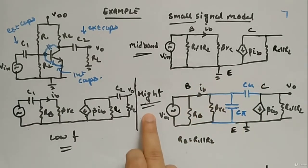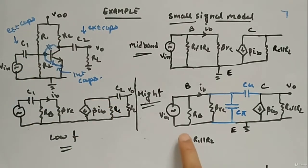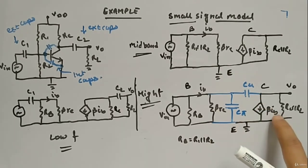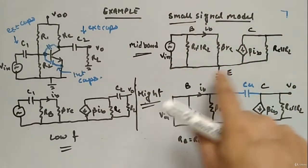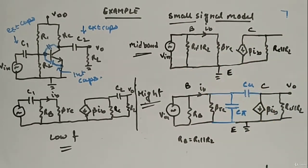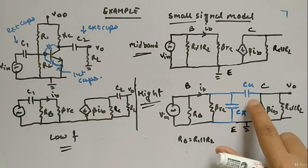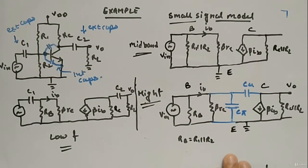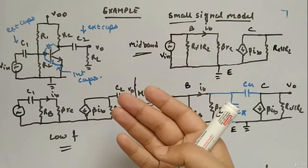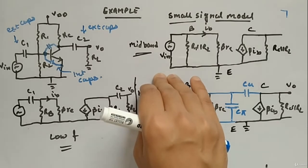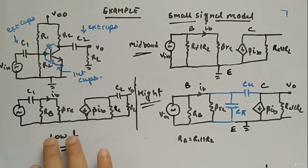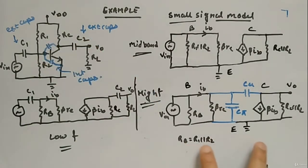For the high-frequency model, external capacitors (C1, C2) are shorted but internal capacitors are not open — so you have Vin, Rb, Ib, beta, Re, Cpi, Cmu, and RC parallel RL, with Cpi between base-emitter and Cmu between base-collector. For the low-frequency model, external capacitors won't be shorted but internal capacitors will be open. So external capacitors come into picture during low-frequency analysis, and internal capacitors come into picture during high-frequency analysis.